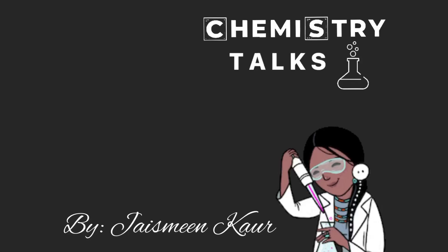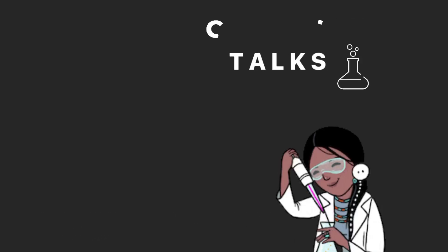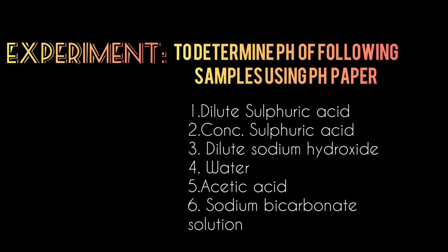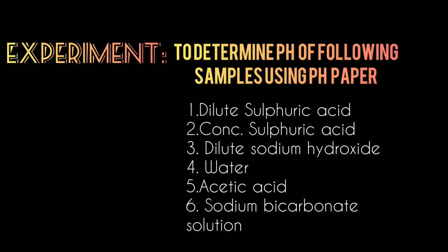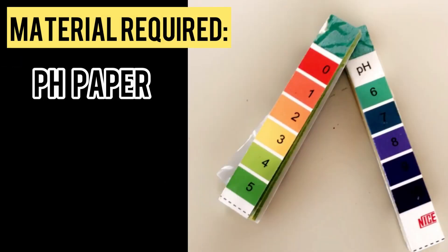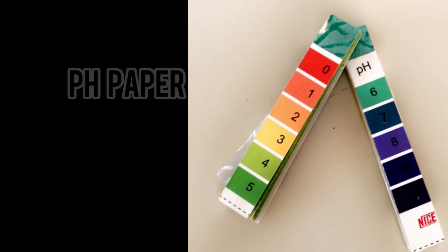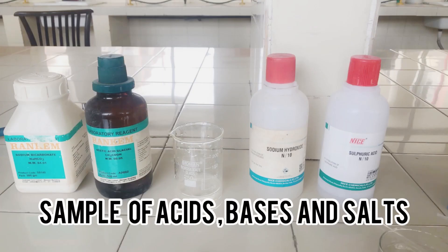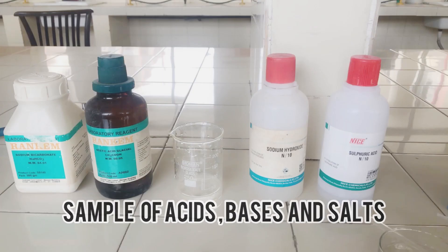Hello to my all budding scientists. Today we will be performing a simple experiment to determine pH of following samples using pH paper. What we need is pH paper and few samples of acids, bases, and salts.